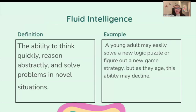Fluid intelligence: the ability to think quickly, reason abstractly, and solve problems in novel situations. For example, a young adult may easily solve a new logic puzzle or figure out a new game strategy, but as they age, this ability may decline.